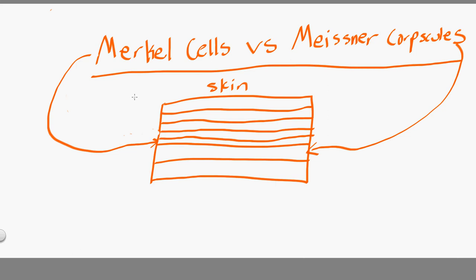Now, to be clear here, the Merkel cells are cells that detect touch. The Meissner corpuscles also detect touch.